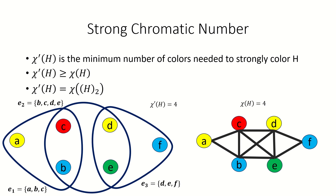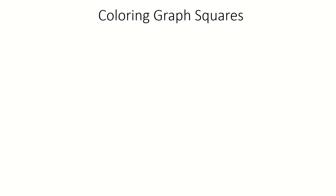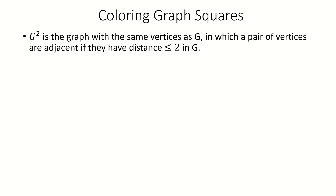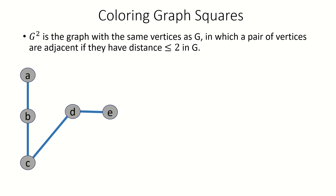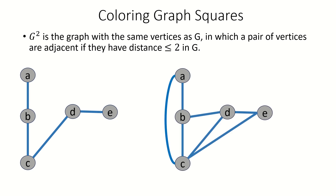Let's look at a connection between strong colorings of hypergraphs and proper colorings of graph squares. Recall that the square of a graph G is the graph with the same vertex set as G, in which two vertices are adjacent when they're at distance two or less in G.